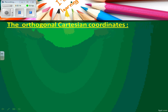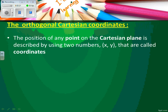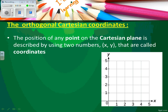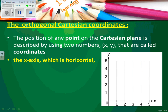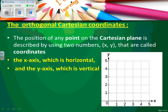The orthogonal Cartesian coordinate. What is the meaning of orthogonal Cartesian coordinate? The position of any point on the Cartesian plane is described by using two numbers, x and y, that are called coordinates. Look at this figure. We have two axes: the first one called x and the second one called y. The x-axis, which is horizontal, and the y-axis, which is vertical.